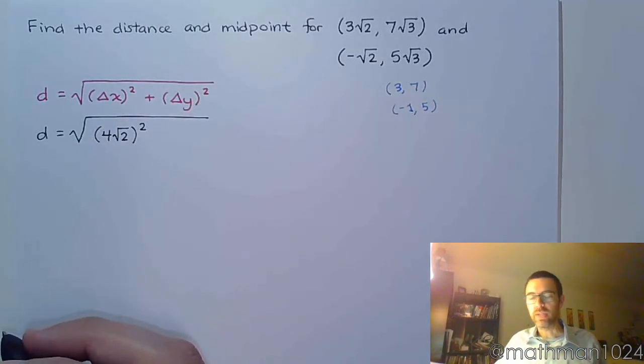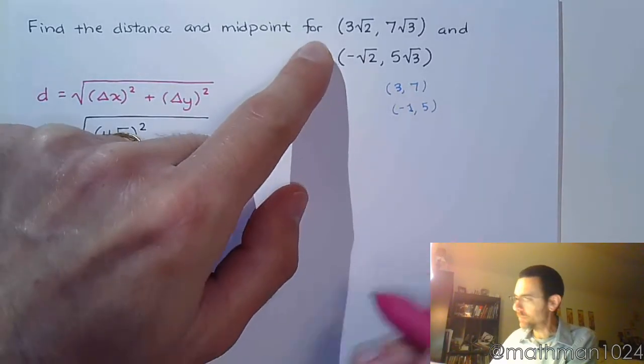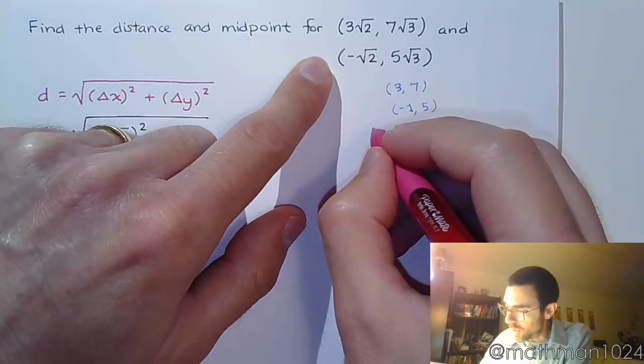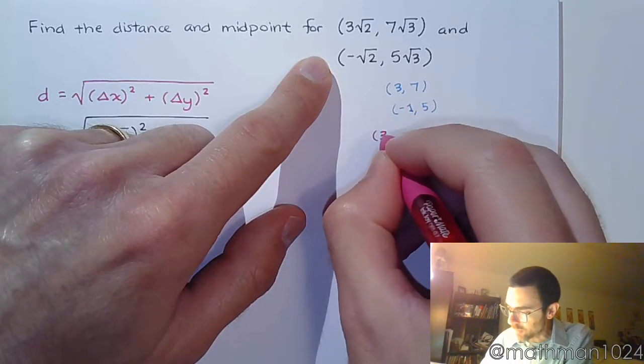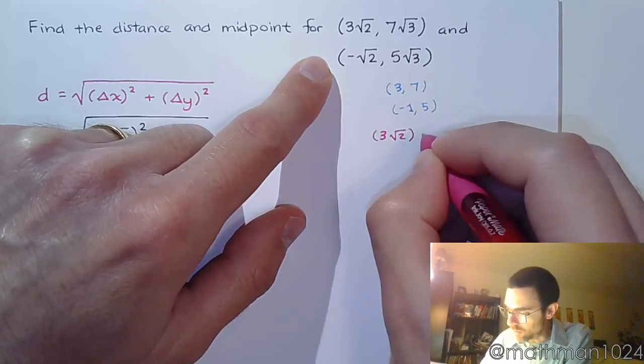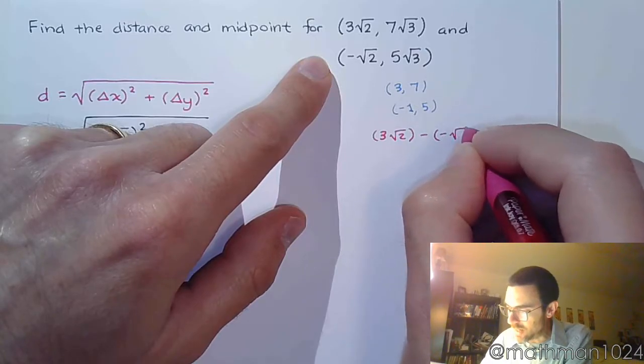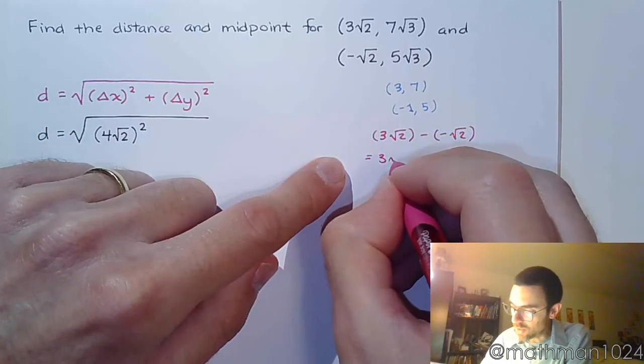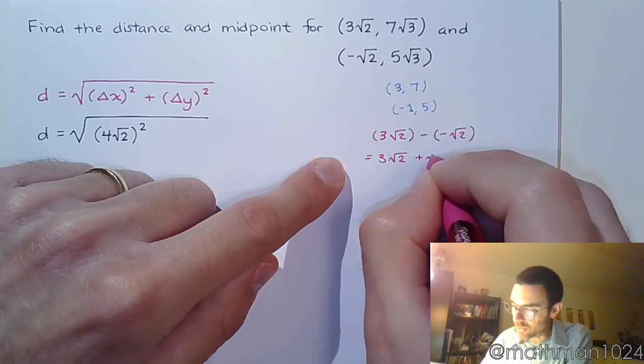Now, if you don't believe me on this, let's look at what the formula says, that long expanded one, where you actually take the difference of these two guys. So if you do the difference of these two, you'd be doing 3√2 minus negative √2, which gives us 3√2 that becomes plus the √2,